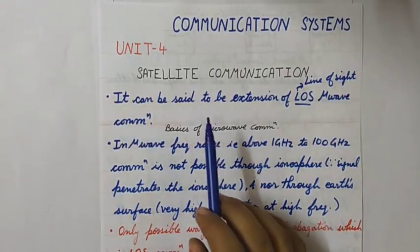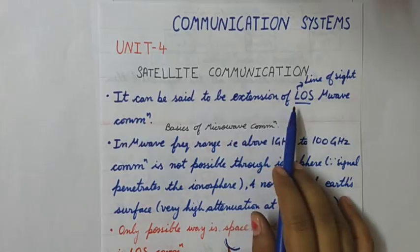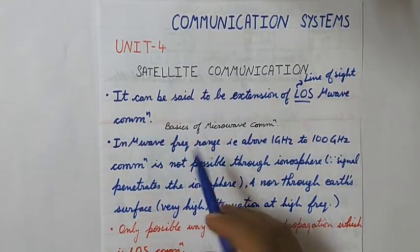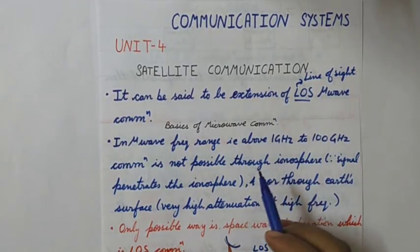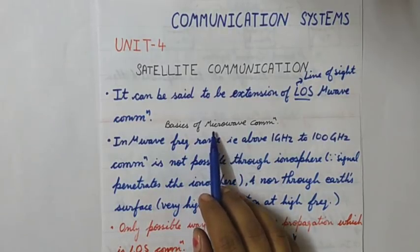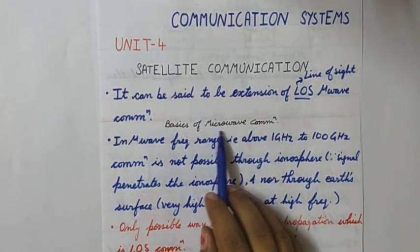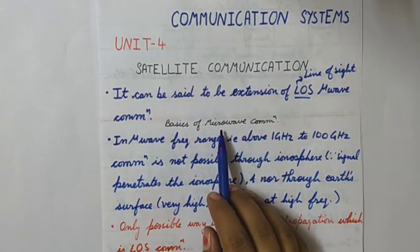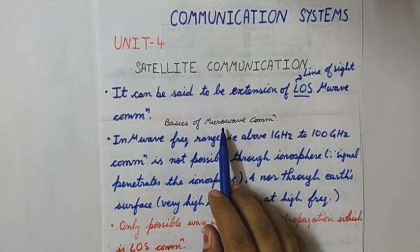Satellite communication is said to be an extension of line-of-sight microwave communication. To understand satellite communication, some basics of microwave communication need to be discussed. As the term says, microwave communication means communication at microwave wavelengths — micro is 10 to the power minus 6 in wavelength, and if you convert it into frequency we get 10 to the power 6, that is the gigahertz range.